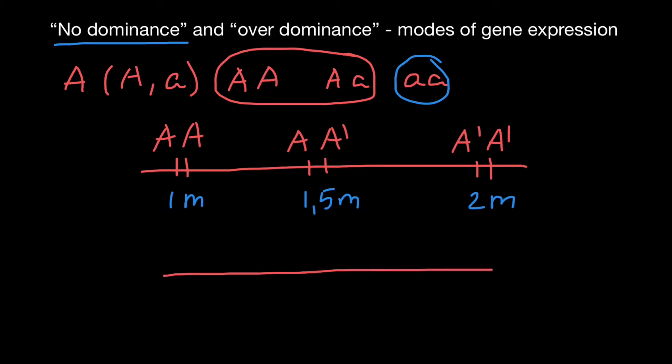Again, here's a line. And let's say we have one genotype, which is capital A, capital A here. And here we have another genotype, which is capital A prime and capital A prime. And now let's suppose that we cross these two genotypes, and we got a third genotype, which is going to be heterozygous, and which is going to be capital A and capital A prime.